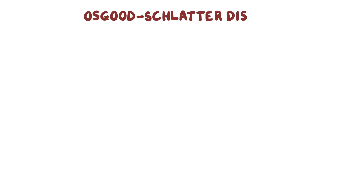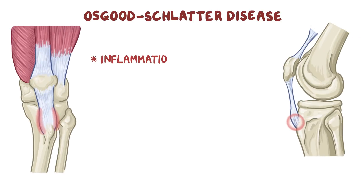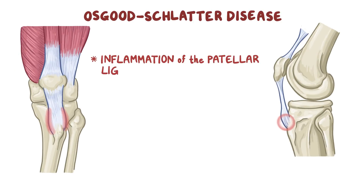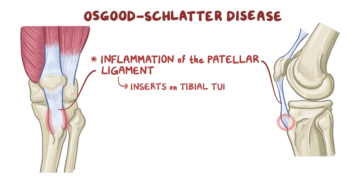Osgood-Schlatter disease is an inflammation of the patellar ligament, right at the point where it inserts on the tibial tuberosity, resulting in painful swelling just below the knee.